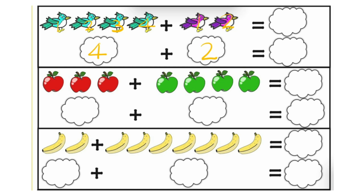Now we will count all together. 1, 2, 3, 4, 5 and 6. It means 4 plus 2 is equal to 6. So how many birds are there? 6. Now same here, 4 plus 2 is equal to what? 6.